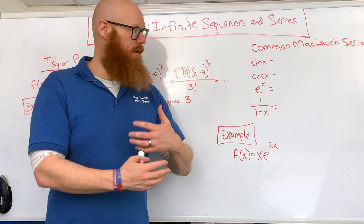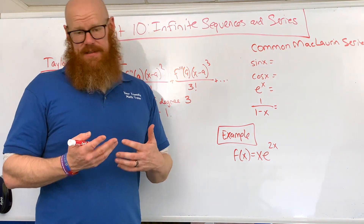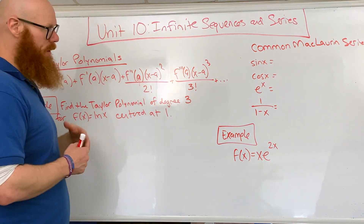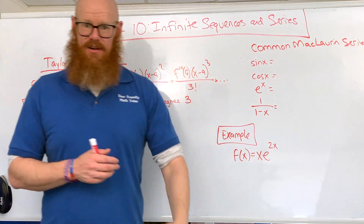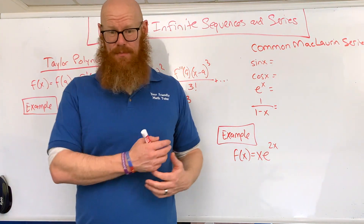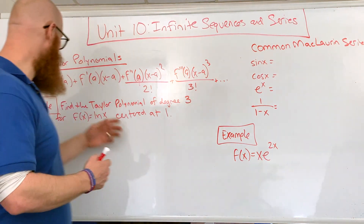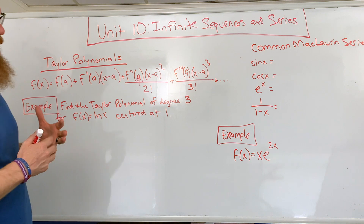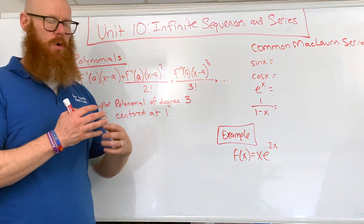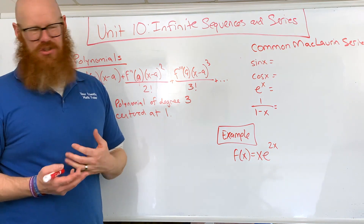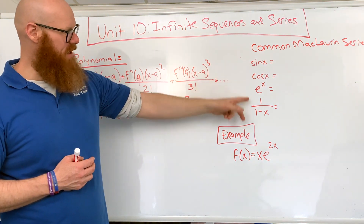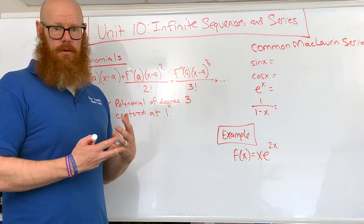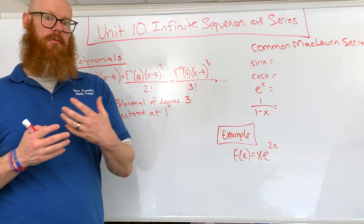In the last video, we looked at a lot of infinite series and determining how they converge or diverge. Now we take it even further and go into Taylor series, McLaurin series, and power series in general. We get started with things called Taylor polynomials. A Taylor polynomial is a way to use a polynomial to approximate other types of functions — usually transcendental functions like sine, cosine, e to the x, or even some rational functions. So non-polynomials, we can use polynomials to approximate them.